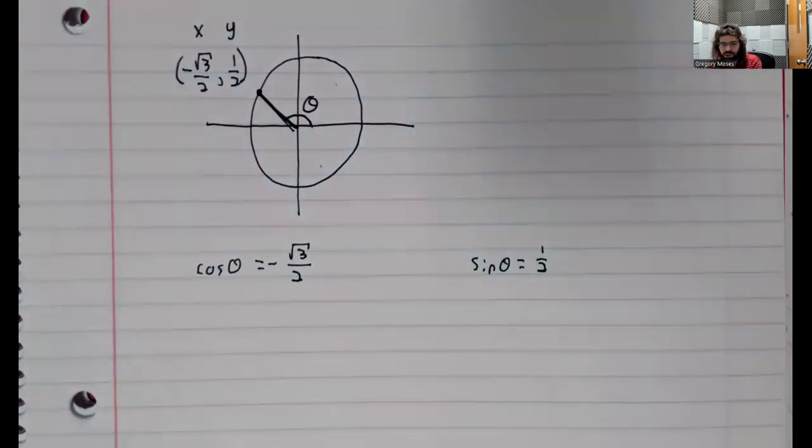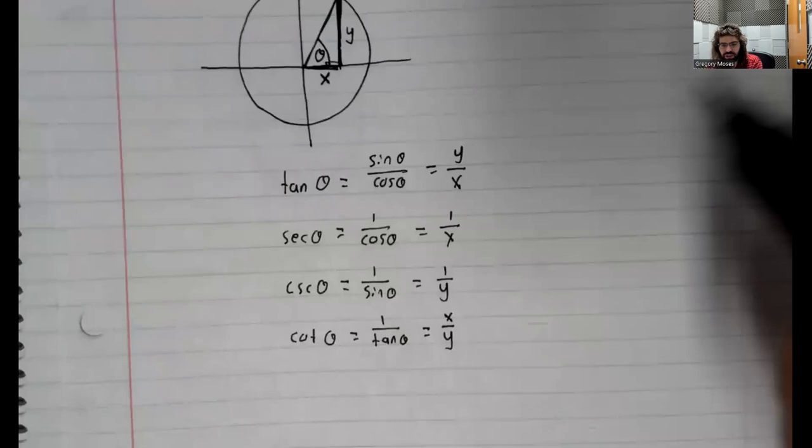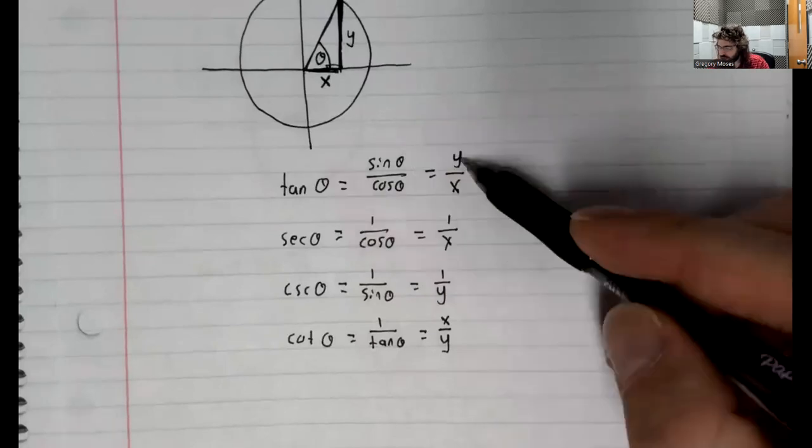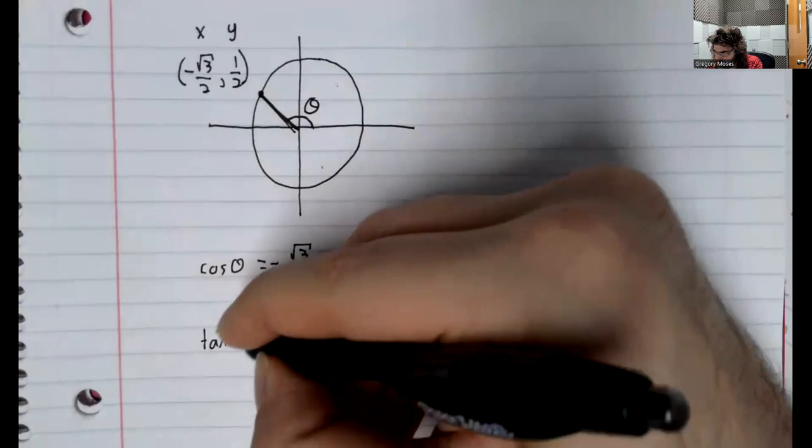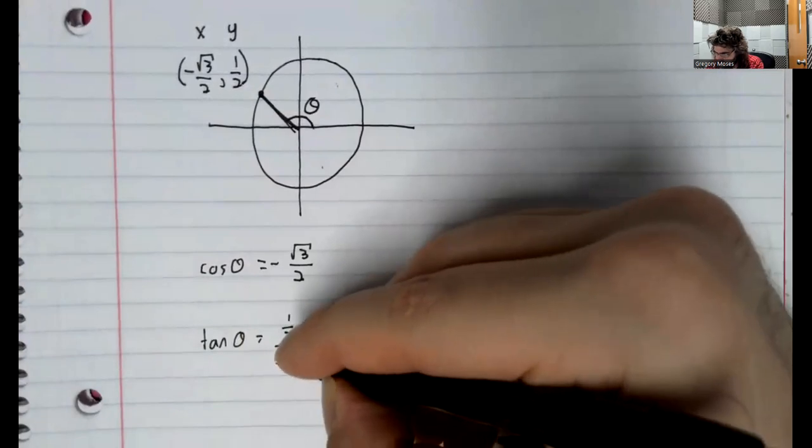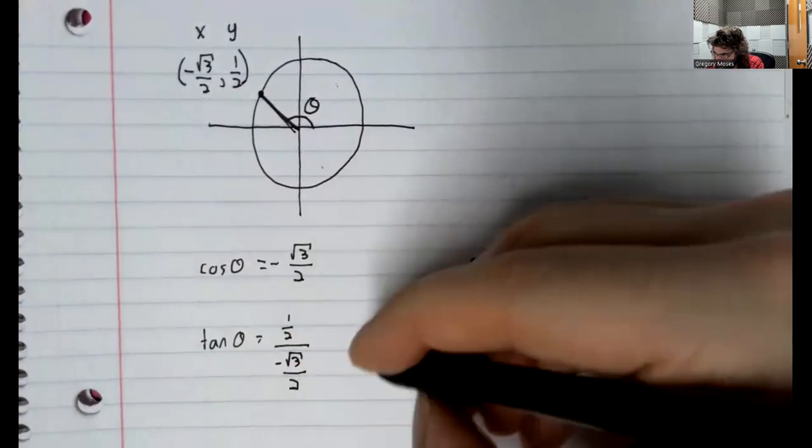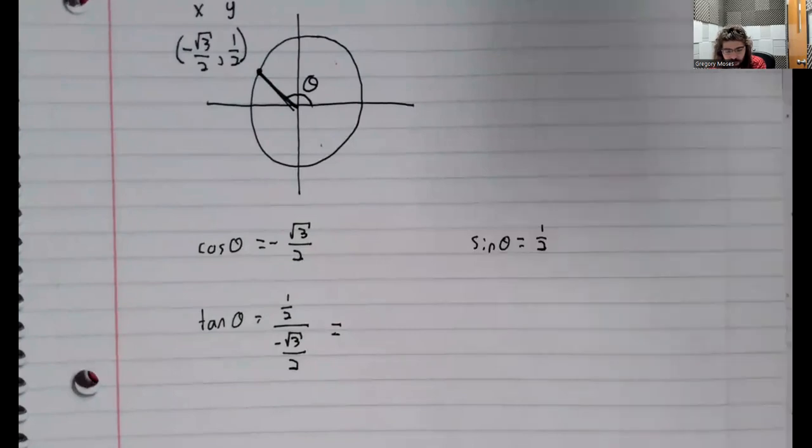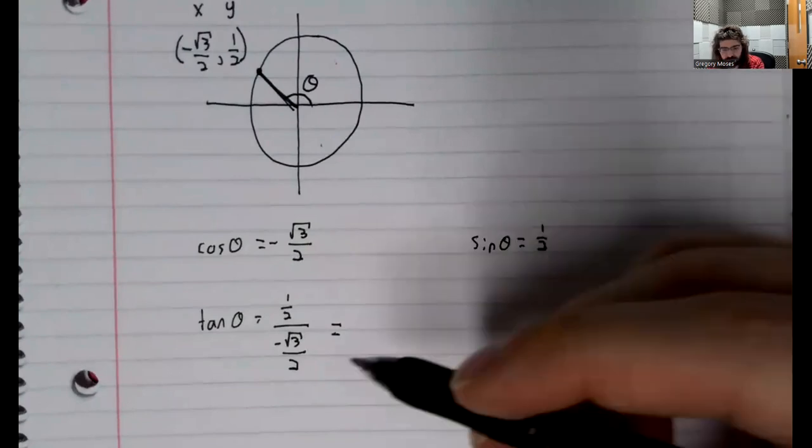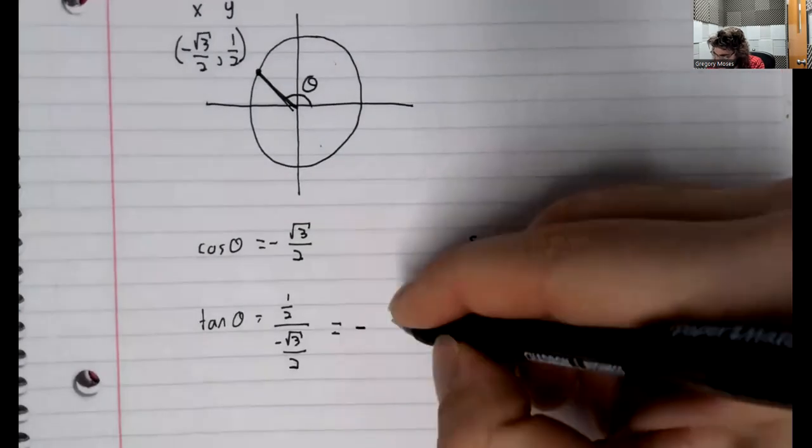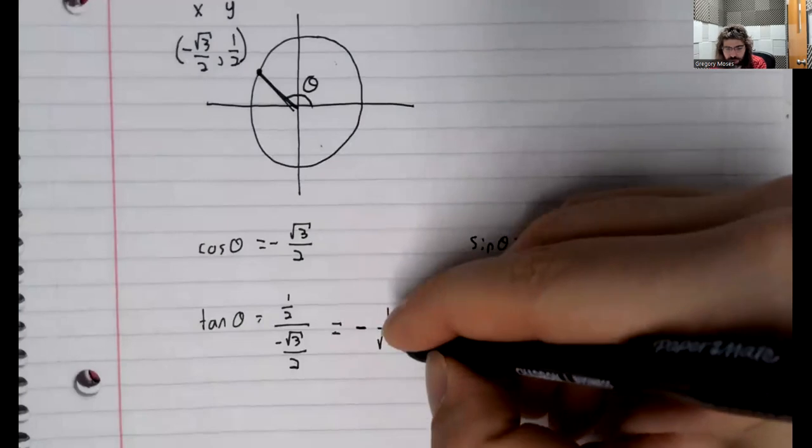And then we just plug and play with these. The tangent is the y-coordinate over the x-coordinate. We should simplify this a little. I don't really care about getting square roots into numerators. But at the very least, we should note that this 2 and this 2 cancels and gives us negative 1 over the square root of 3.